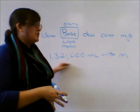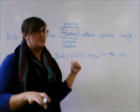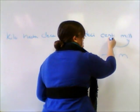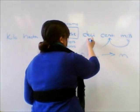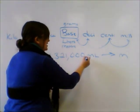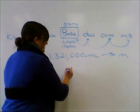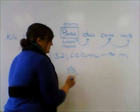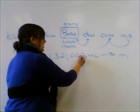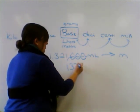Liters are bigger than milliliters, so we should be making our number itself smaller — even though we're not changing the item we're measuring. We need to go from milli to base: one jump from milli to centi, two from centi to deci, three from deci to base. So we need to move our decimal point three places. When you have a number without a decimal point, it's implied that the decimal is at the end. So we take that decimal and jump it three times, giving us 1,321 liters.